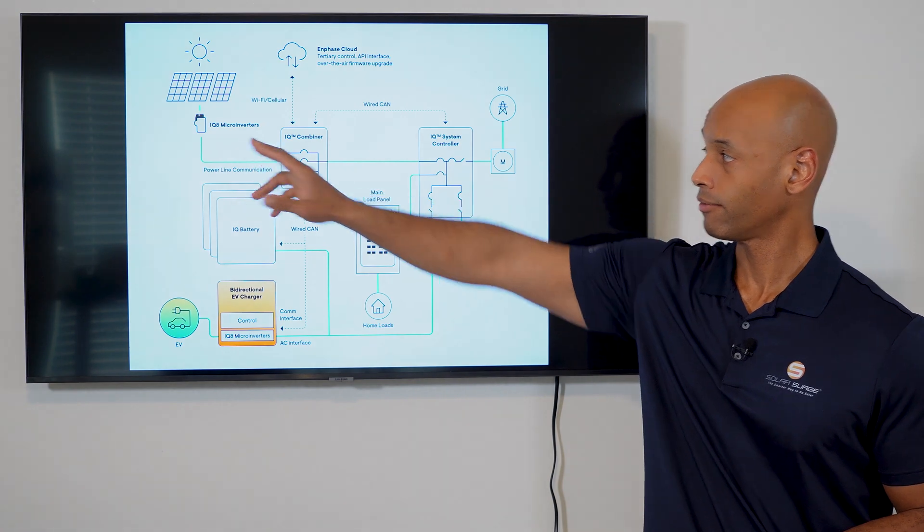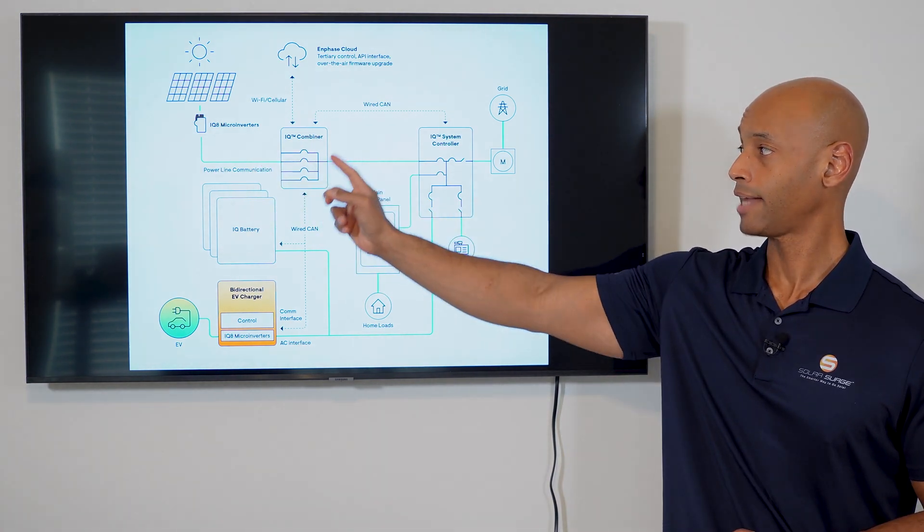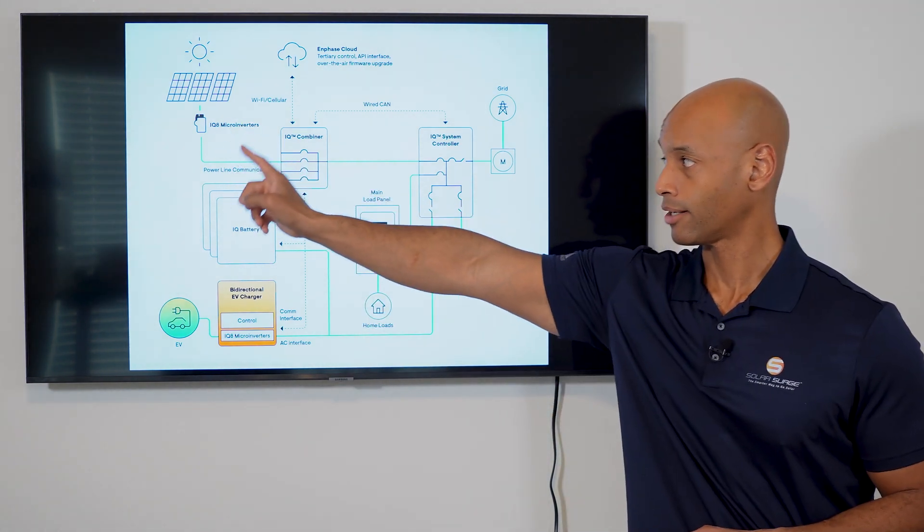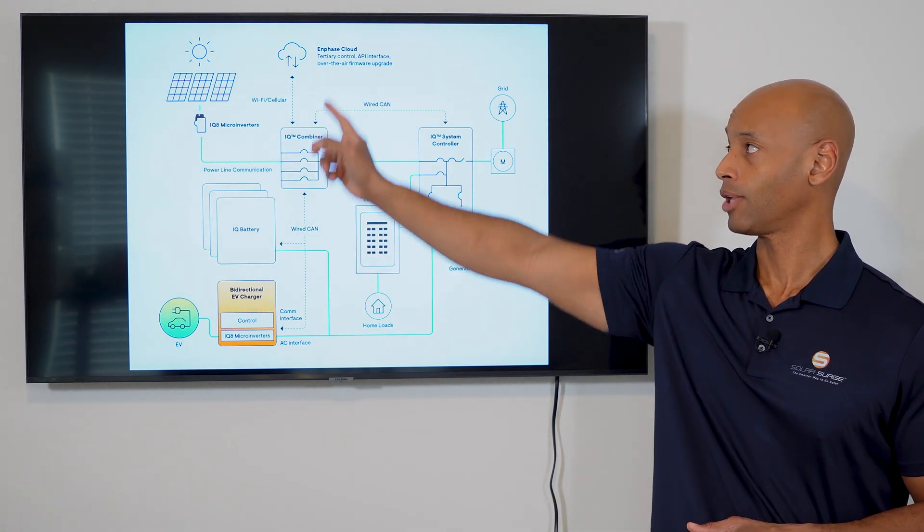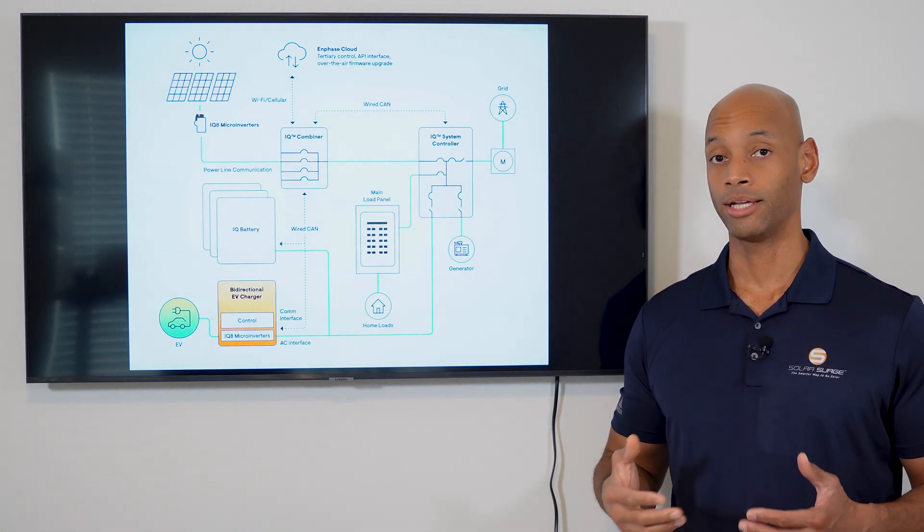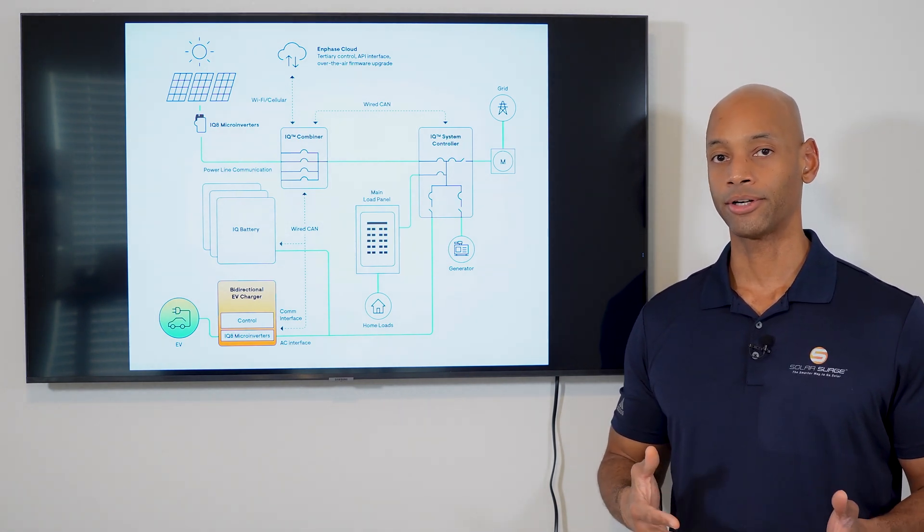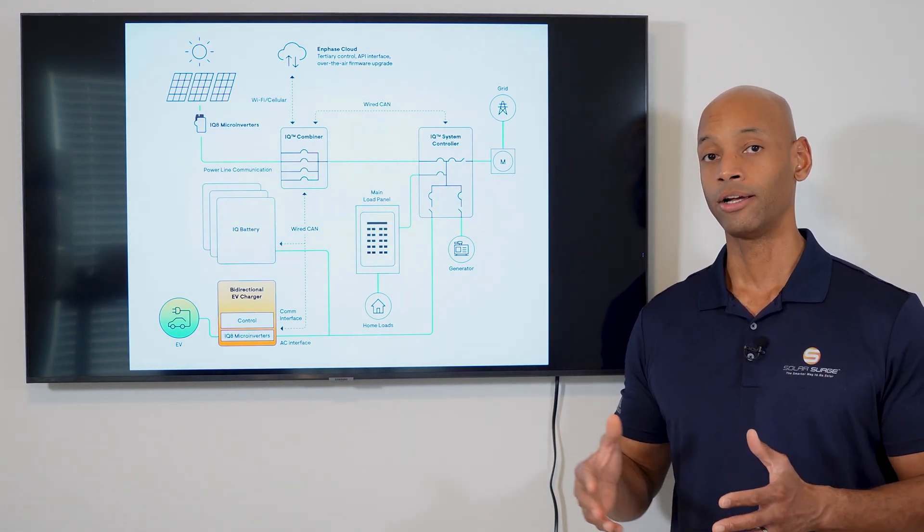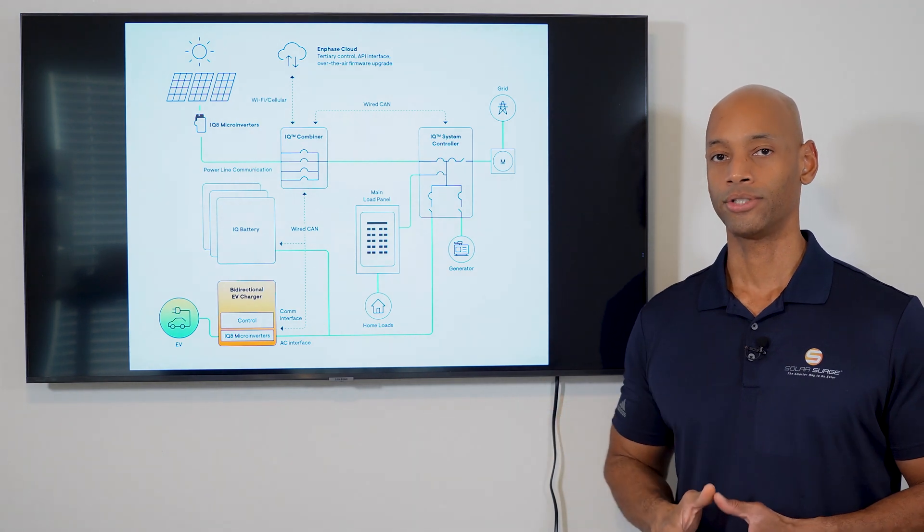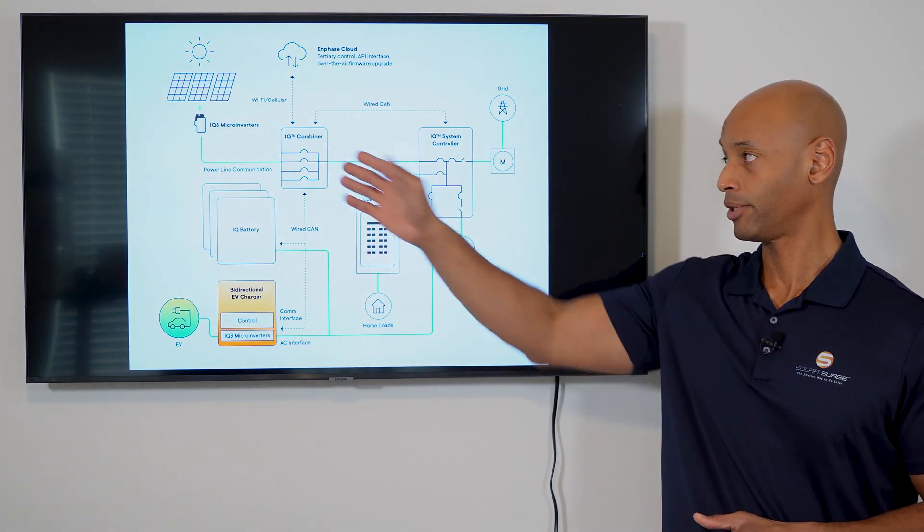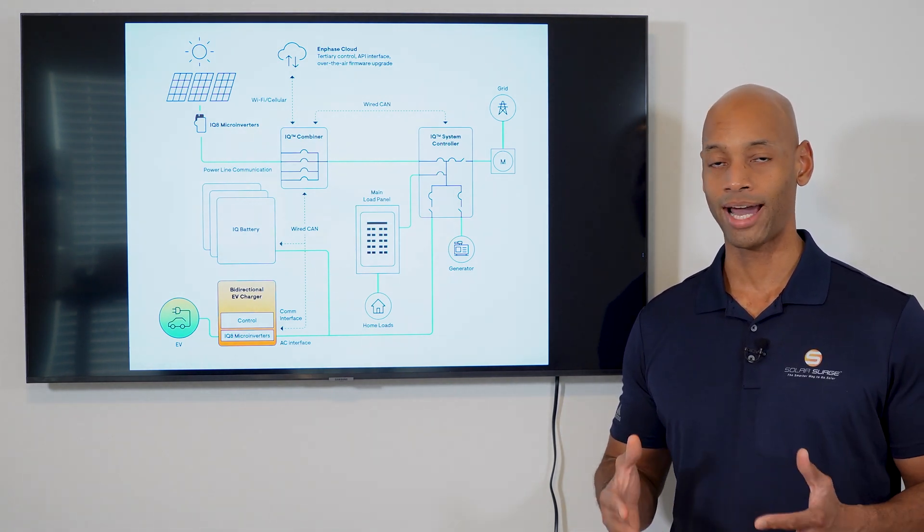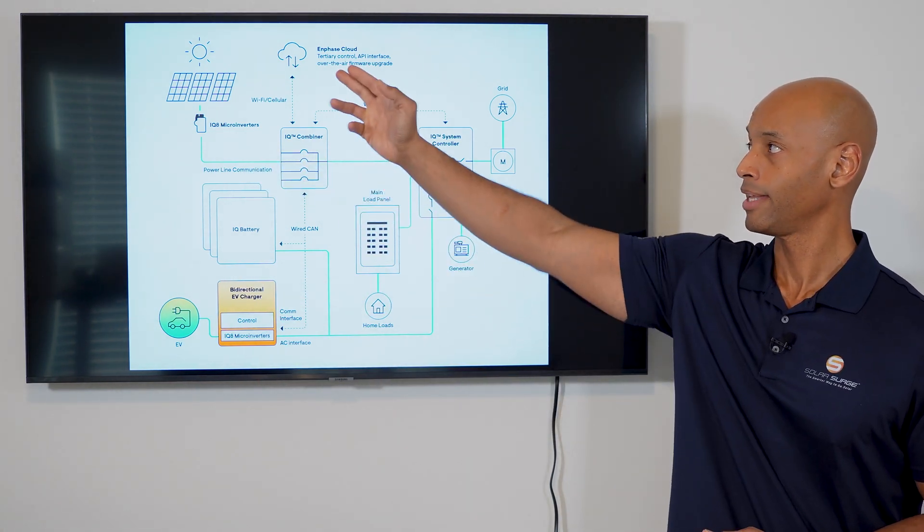So at minimum, you're going to have the Enphase microinverters, the Enphase IQ combiner, which inside the combiner is a device called an Envoy, which is basically your data uplink. It's the device that collects all the monitoring and performance data from the microinverters on the roof, and then uploads it to the Enphase cloud, either using a Wi-Fi connection tapped into your home network, or in many cases it'll use an internal cellular card. The internal cellular card is convenient because that way when you install it, you don't have to actually have the homeowner's Wi-Fi password. The Enphase system would have its own dedicated link using the cell card. That way if they change their internet home service provider, you don't have to change anything with the monitoring software. So those are the basic pieces of the Enphase solar system. The microinverters, the combiner, and then the cloud monitoring.